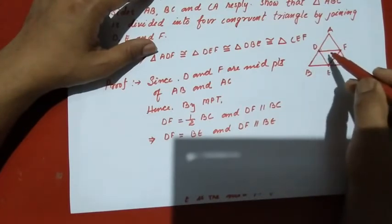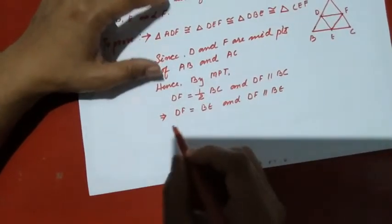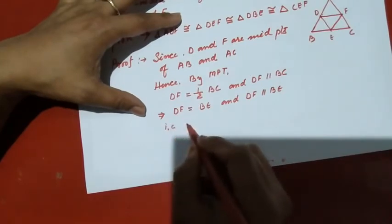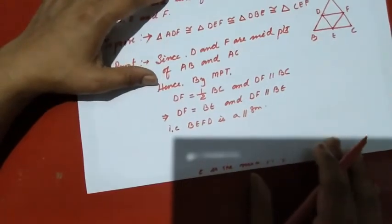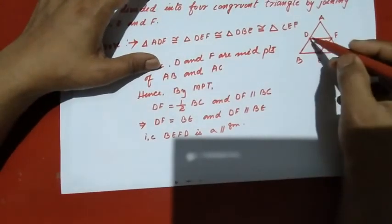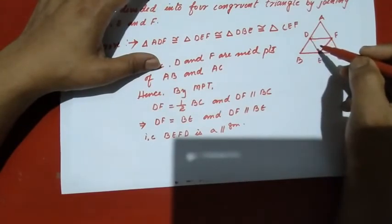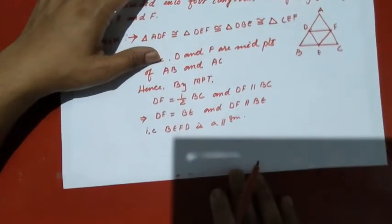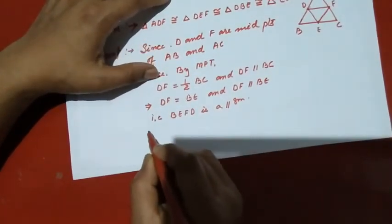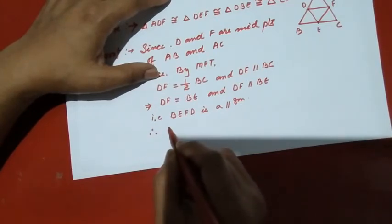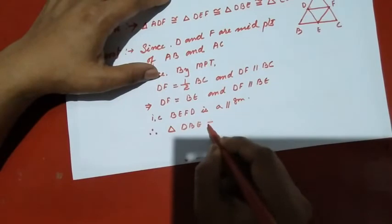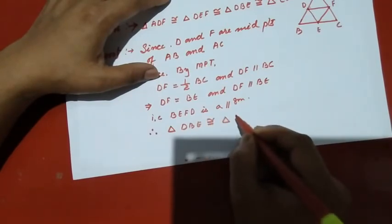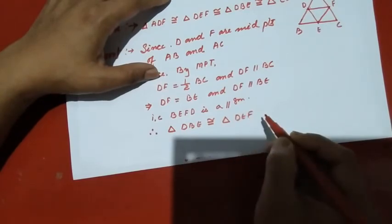BEFD is a parallelogram. Since the diagonal of a parallelogram divides it into two congruent triangles, therefore triangle DBE is congruent to triangle DEF.